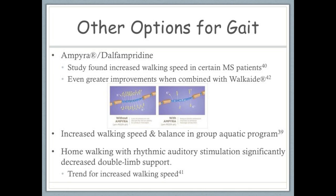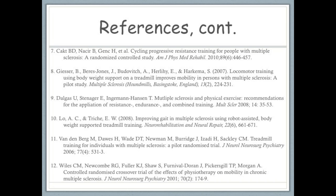Community aquatics and rhythmic auditory stimulation are two other interventions that have been shown to improve gait in people with MS. In conclusion, research suggests that progressive resistance training, aerobic exercise, combined training, functional electrical stimulation, custom AFOs, Ampyra, group aquatic therapy, or rhythmic auditory stimulation can have modest to significant effects on gait speed, endurance, or motion. Considering the available equipment and modalities at your clinic as well as the individual needs and specific impairments of your patients will help you choose the appropriate interventions to improve gait in people with MS that you work with. This concludes the module for gait interventions for people with MS.